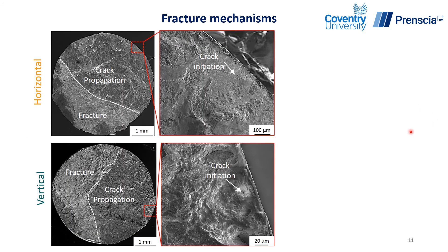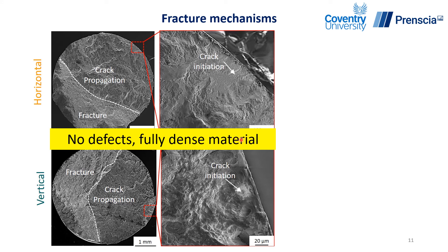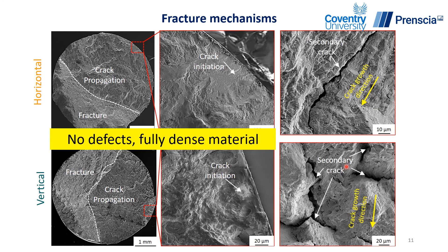After failure, we studied the fracture surfaces of all the samples and noticed that crack initiation occurred from a microstructure feature in all samples, both in horizontal and vertical orientation. We haven't found any defects on the fracture surfaces, which means there are no defects in this build and it is a fully dense material. In the crack propagation region, we noticed a large number of secondary cracks, which is the result of the large colony microstructure present in this build, leading to secondary crack formation when subjected to cyclic loading.